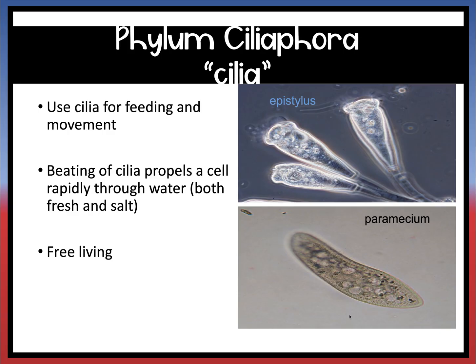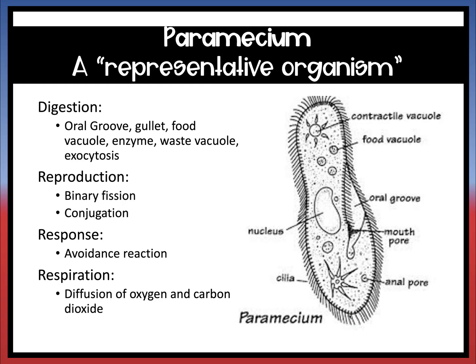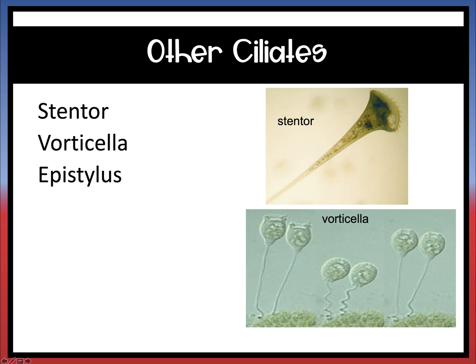The next phylum is phylum Ciliophora, and they move by cilia. They also use cilia for feeding — they move water or food and drag it closer to their opening using that rapid movement. The representative organism from this phylum is the paramecium. If you look at the image on your screen, you can see the paramecium with cilia surrounding it all around. Some other ciliates include stentor and vorticella.